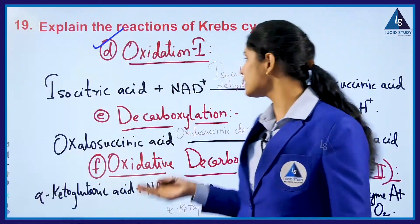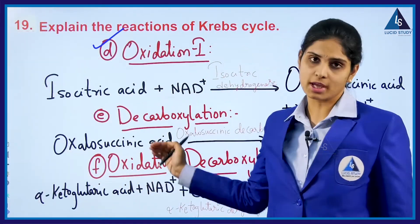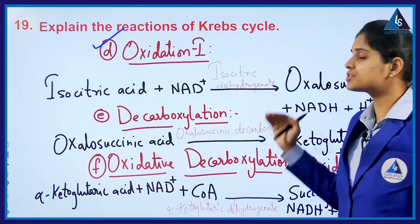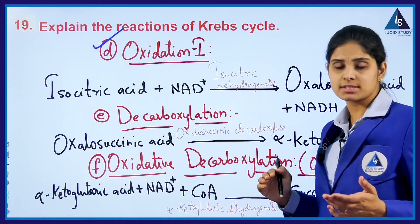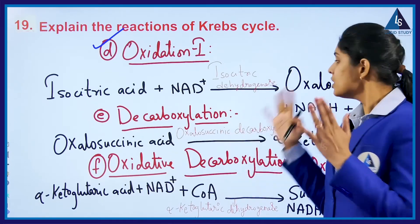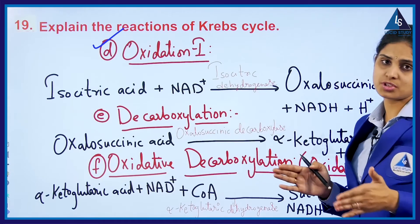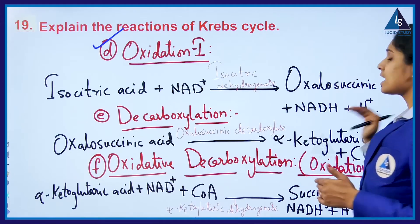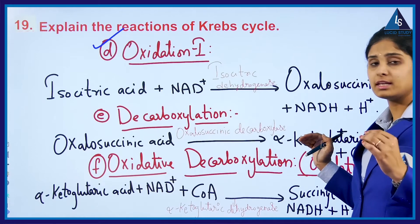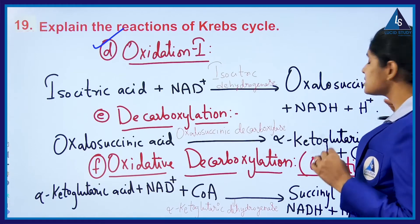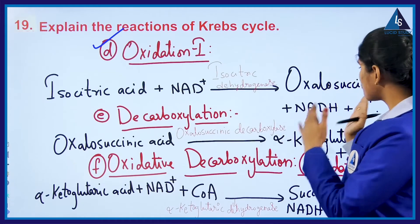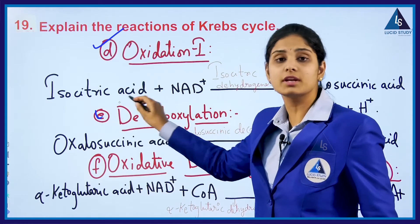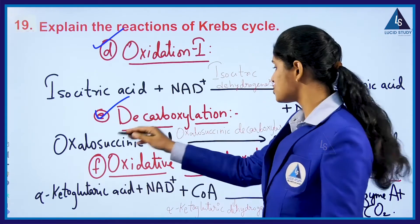Oxidation 1 is where the formed isocitric acid reacts with NAD+ under isocitrate dehydrogenase enzyme. This enzyme helps in making oxalosuccinic acid plus NADH plus H+. The formed oxalosuccinic acid then undergoes the process of decarboxylation.